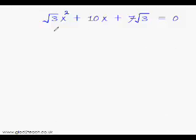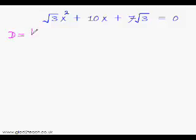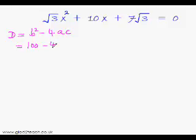So now let me do it. Like a qualified doctor, before we can prescribe the right treatment or the technique to solve this quadratic equation, we must first perform a diagnostic test on it. I am talking about that discriminant test. So D equals b squared minus 4ac, and as you already know, this is a, this is b, and this is c. So b squared, that is 10 squared, would be 100 minus 4 times root 3, and c is 7 root 3.